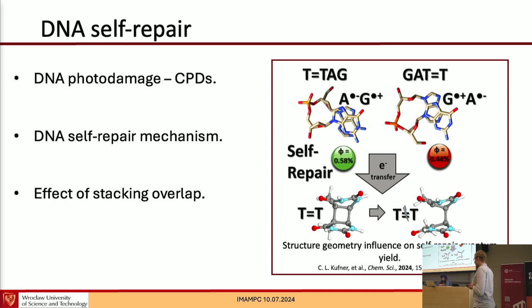The self-repair quantum yield for a structure TTAG was higher than for a structure with reverse sequence GATT. In order to explain this phenomenon, they looked at the structure of these two strands and they observed that the overlap of these two bases in that structure with higher quantum yield is visually better than in the second one. And that is an interesting hypothesis. However, in order to prove that, we would need some better way to assess this overlap rather than just by our naked eyes.